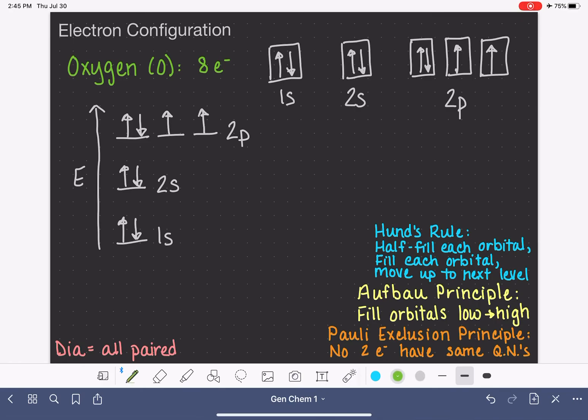From this information, let's write our electron configuration. We can see, looking at the diagram, we have 1s². We have 2s². And for our 2p's, we have 1, 2, 3, 4. 2p⁴.